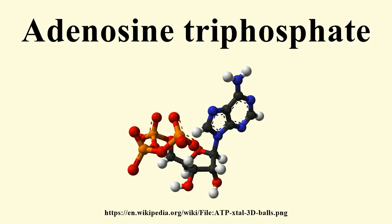ATP synthase contains a rotor subunit that physically rotates relative to the static portions of the protein during ATP synthesis. Most of the ATP synthesized in the mitochondria will be used for cellular processes in the cytosol, thus it must be exported from its site of synthesis in the mitochondrial matrix. The inner membrane contains an antiporter, the ADP-ATP translocase, which is an integral membrane protein used to exchange newly synthesized ATP in the matrix for ADP in the intermembrane space. This translocase is driven by the membrane potential, as it results in the movement of about four negative charges out of the mitochondrial membrane in exchange for three negative charges moved inside.